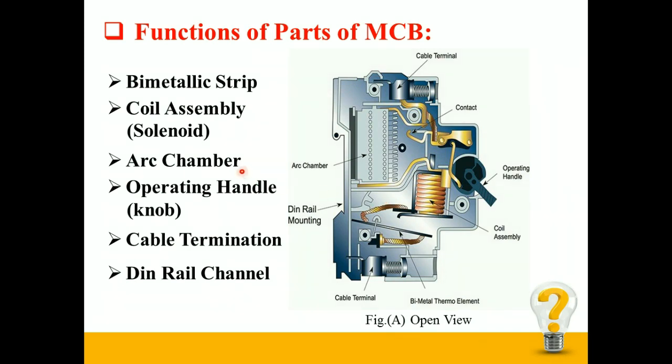Third is the arc chamber. When the fixed contact and moving contact separate to break the circuit, an arc is formed. The arc chamber is used to quench the arc — that is, to pull it off. This is the arc chamber shown in the open view.